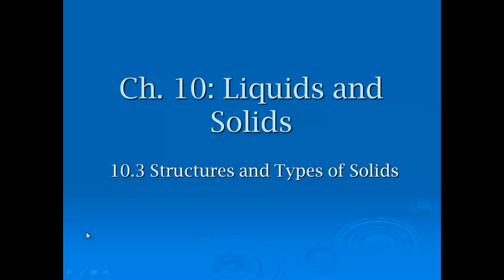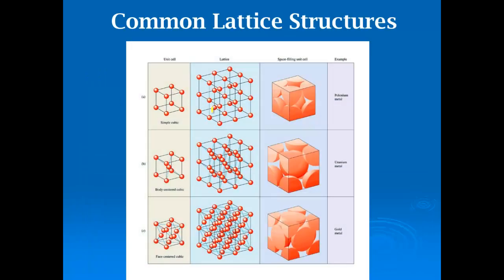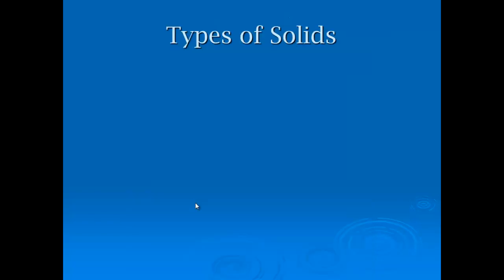Today we are going to talk about the structures and types of solids and kind of tie together what these different types of bonding mean. Now there's two big broad categories: crystalline solids that are very organized, and amorphous that are very disorganized. This is just some examples of some common lattice structures. We're not going to get too specific, but there's all these different geometric patterns which ultimately minimize the energy. Some of you have simple cubic, body-centered, face-centered, but this terminology we're not going to get into today.